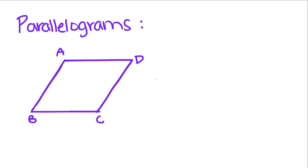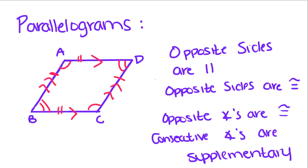Today our focus is parallelograms. And like the name suggests, opposite sides are parallel. So AD and BC are parallel, and AB and DC are parallel.